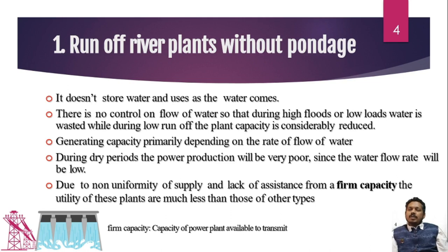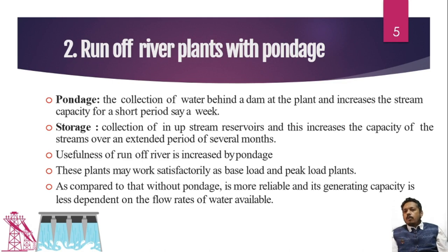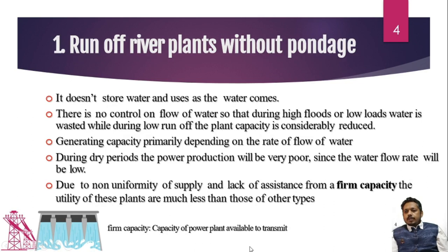One advantage is that it can be built in a very compact area — for example, a very narrow river where there is no possibility of making a reservoir, such as in the Himalayan region. However, because we totally depend on water flow, the firm capacity is very less. Firm capacity means the maximum capacity of the power plant that is ready to transmit or connect to the grid.